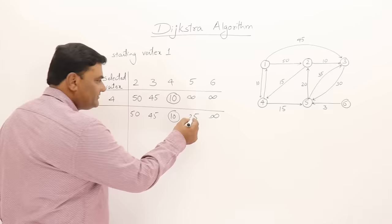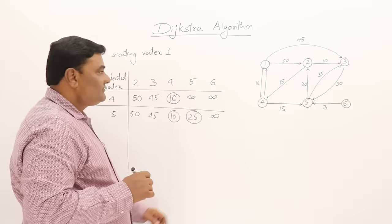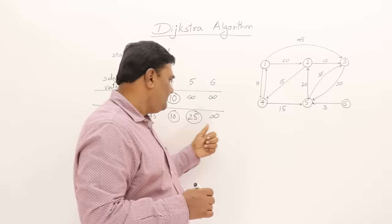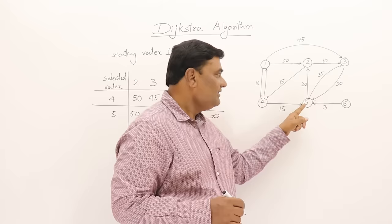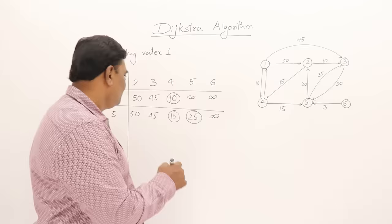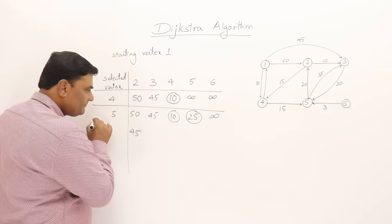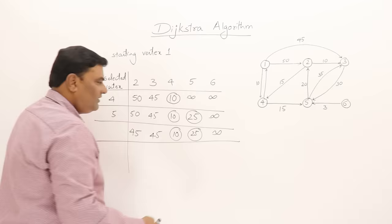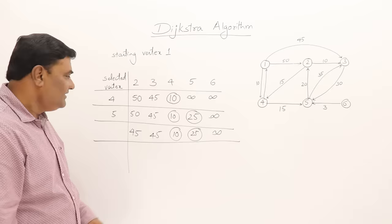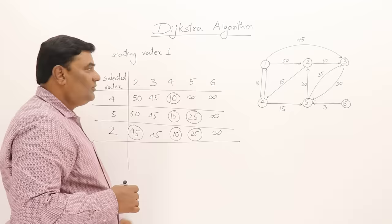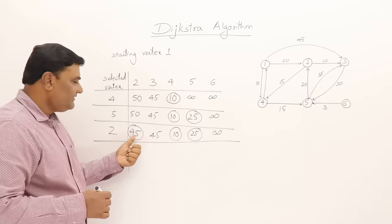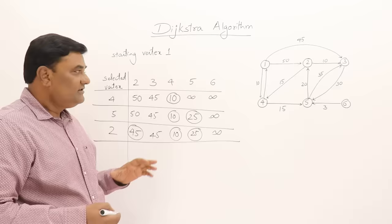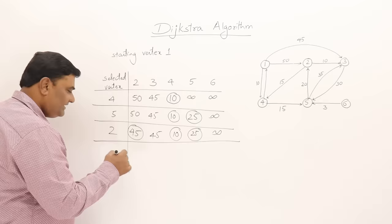Now select the next smallest, which is 25, so vertex 5 is selected. From vertex 5 there is an edge to 3 and to 2. For vertex 2: the distance to 5 is 25, plus 20 is 45, and the current distance is 50. We have a shorter path via 5 that is 45, so modify it to 45. For vertex 3 it is also 45, so it remains. Then select vertex 2. From vertex 2 the connected vertex is 3: 45 plus 10 is 55, but the current distance to 3 is already 45, which is smaller, so no change.